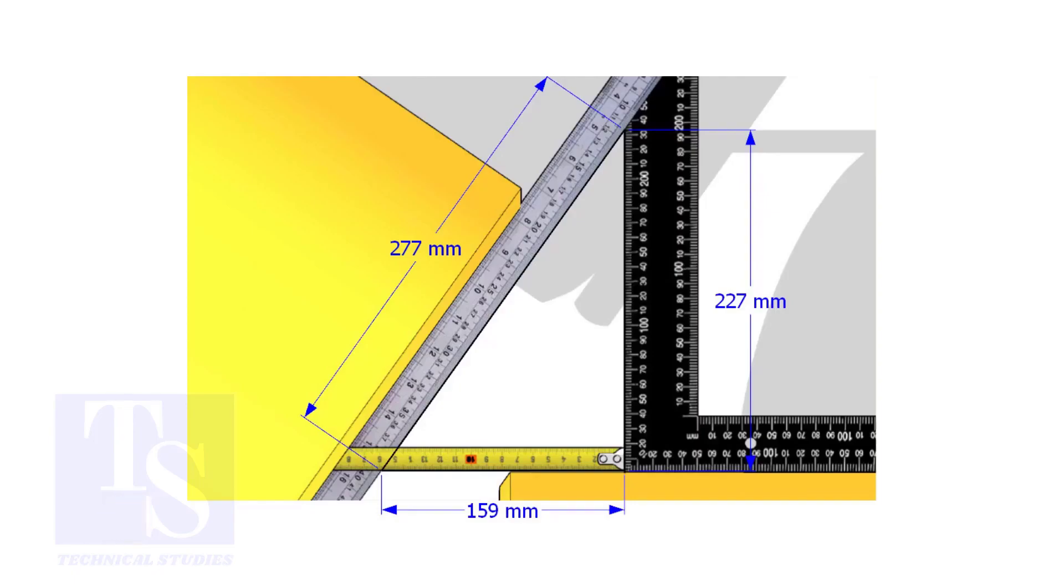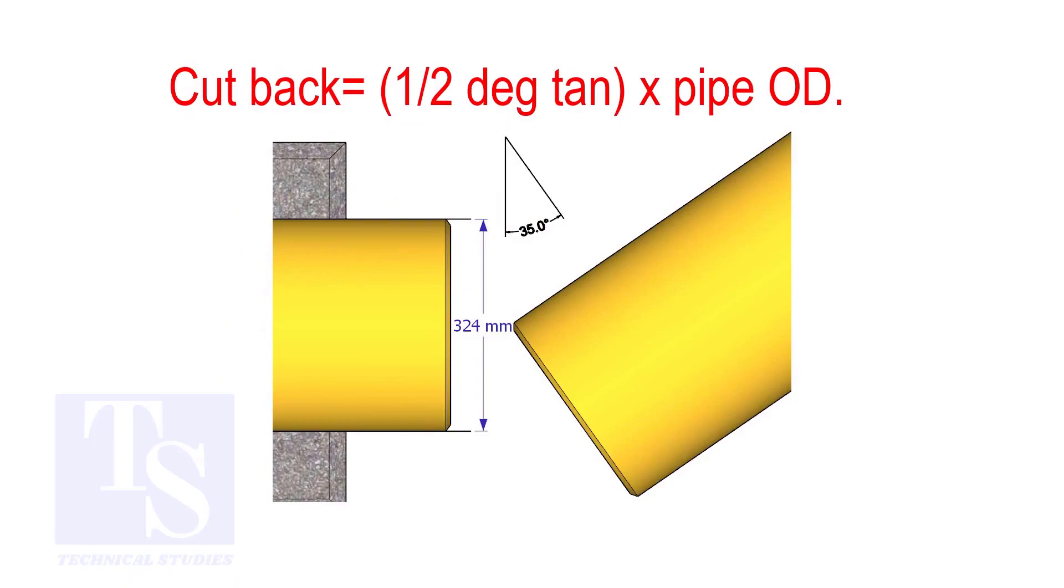How to calculate the cutback of a single cut miter. When it is a single cut, the cutback is half degree tan multiplied by the OD of the pipe.